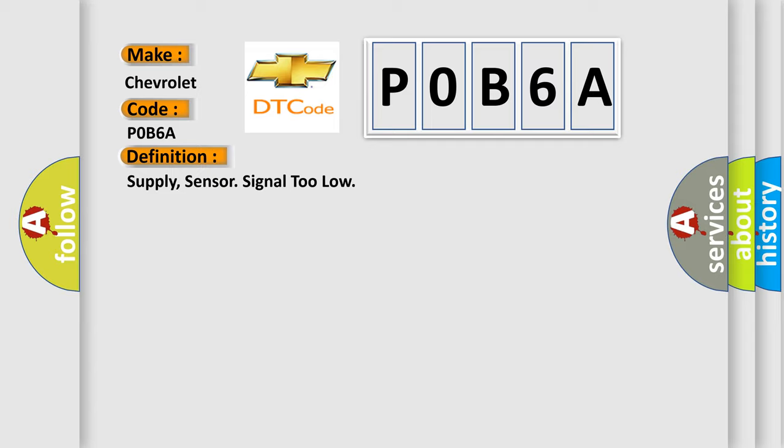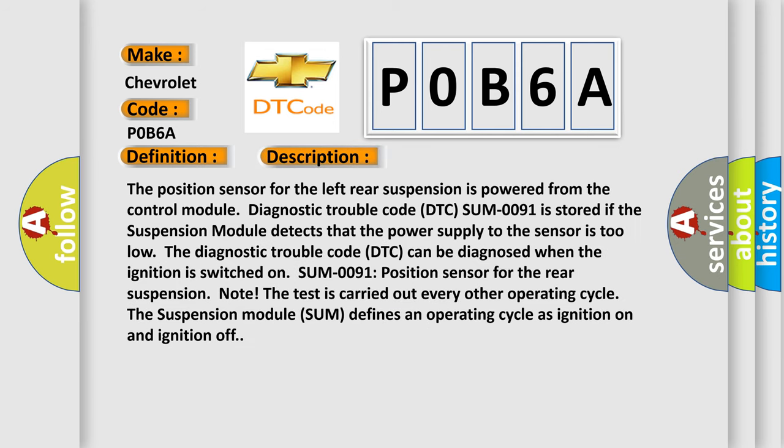And now this is a short description of this DTC code. The position sensor for the left rear suspension is powered from the control module. Diagnostic trouble code DTC P0091 is stored if the suspension module detects that the power supply to the sensor is too low.